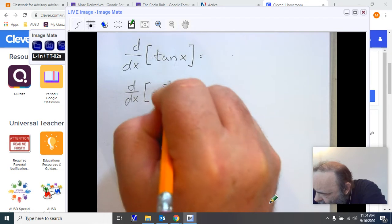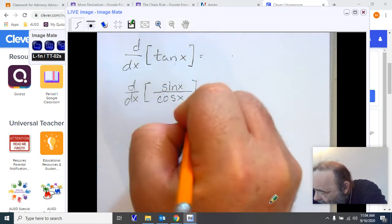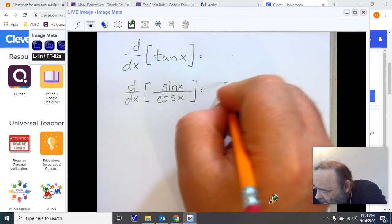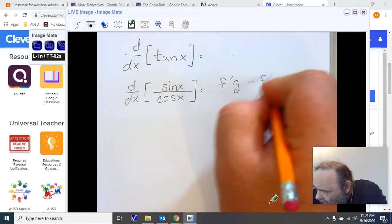And the first thing I notice is that by putting this into the ratio sine of x over cosine of x, I now have a quotient, and I can use the quotient rule. Low d high, less high d low, square the bottom, and away we go.